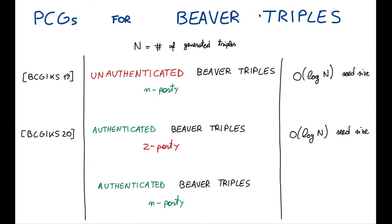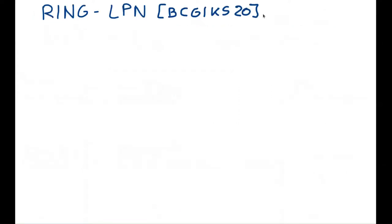But what about authenticated beaver triples in the n-party setting? Until recently, no efficient construction was known. In this work, we present a solution with O(sqrt(n)) seed size. The security of our PCG relies on the Ring LPN assumption, which I'm going to describe now.